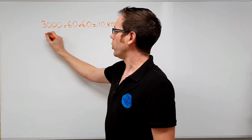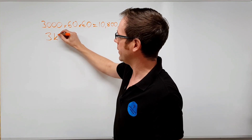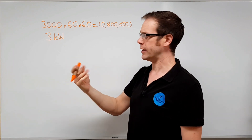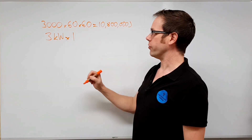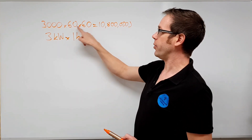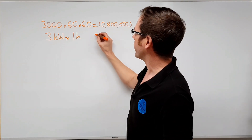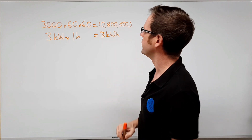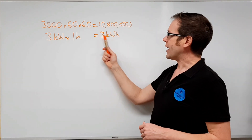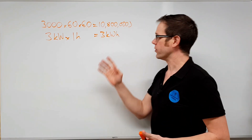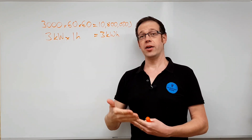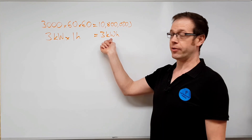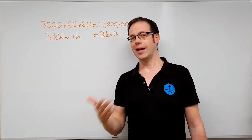Instead of charging for energy in joules, the electricity companies use the kilowatt hour. Take the three kilowatt immersion heater on for one hour: that's three kilowatts multiplied by one hour, giving three kilowatt hours. Compare that to 10,800,000 joules — both represent the same quantity of energy. Electricity boards often refer to kilowatt hours simply as 'units' on your bill, charging so many pence per unit. That's why kilowatt hours are used instead of joules — they give much easier, less scary numbers to work with.